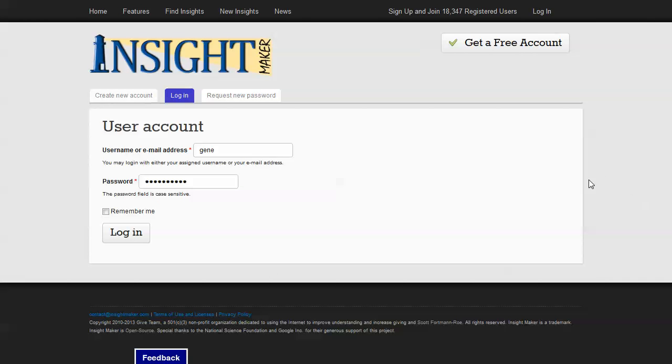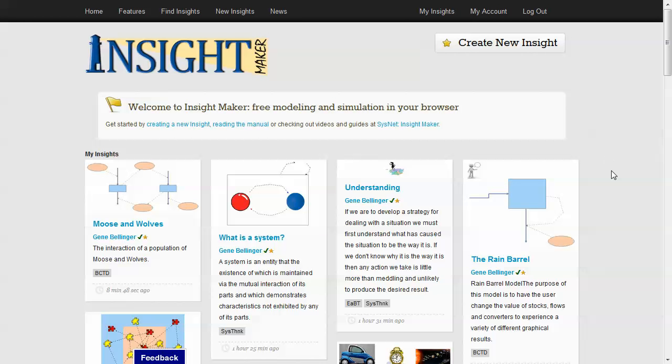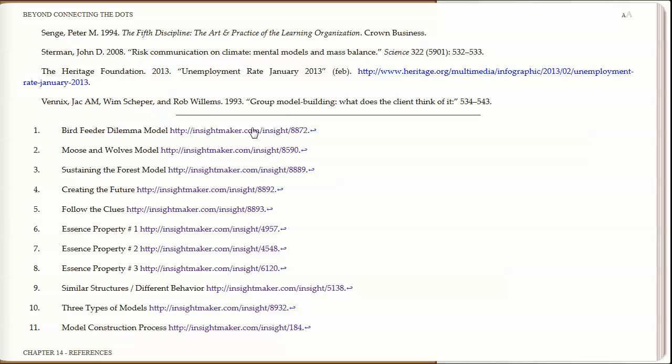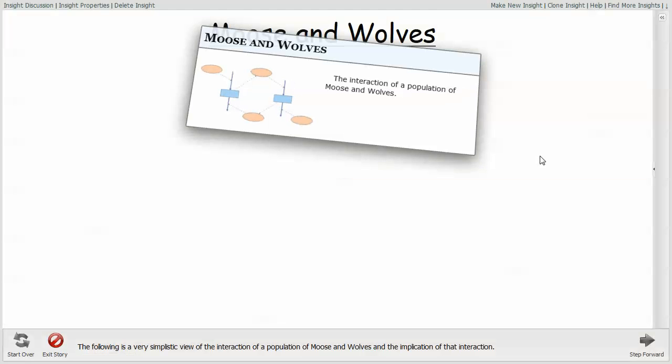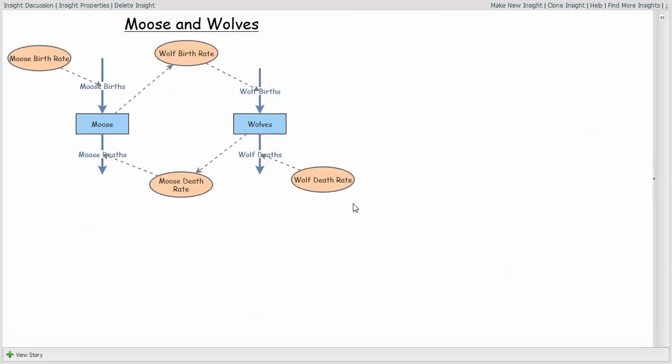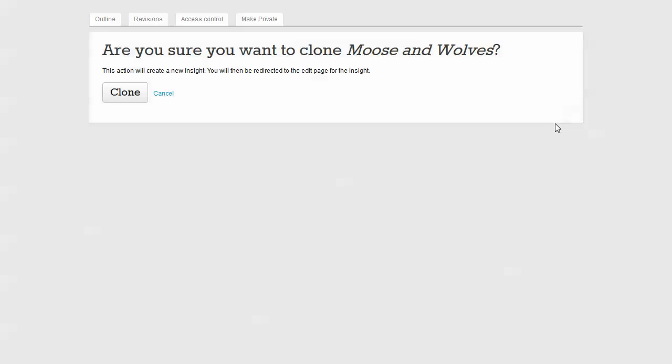And you can go there and simply get a free account and then you can use the environment to the extent that you want to. Though from the content that is in the book, if you then click on one of these links, this will take you to the actual model inside of InsightMaker. You can exit from the story and then you can clone this Insight and make a copy of it that belongs to you, meaning that you can do anything you want to it.